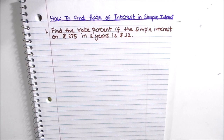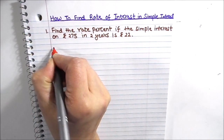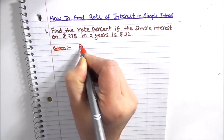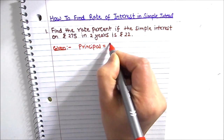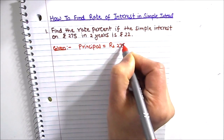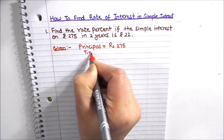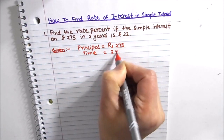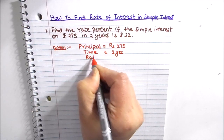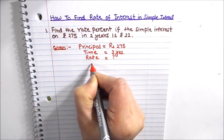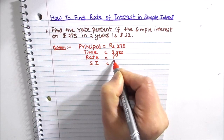The first question is: find the rate percent if the simple interest on rupees 275 in two years is rupees 22. First, let us write what is given in the question. Principal is rupees 275, time is two years, and simple interest is rupees 22. We need to find the rate of interest.